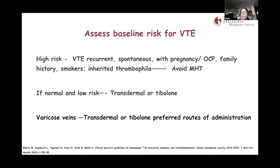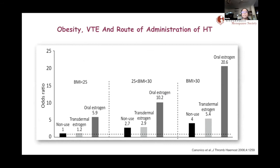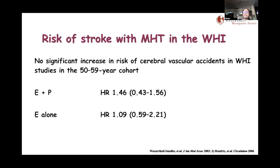It is also important to assess the risk for VTE, especially when offering MHT. The high-risk group can be identified just from history — any recurrent VTE, spontaneous or with pregnancy or OCPs, family history, smokers, or inherited thrombophilia: avoid MHT. You just need to ask a few simple questions without lengthy investigations. In cases of varicose veins, you can use transdermal. Obesity is very important in history taking, because obesity itself can double the risk of VTE.